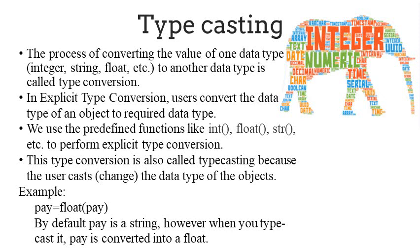We refer to this as an explicit type conversion, where the user converts the data type of an object to a required data type. We use what are called predefined functions, which is int to represent integers, float to represent a float, and str to represent a string.